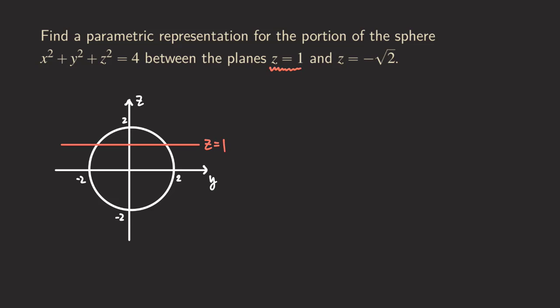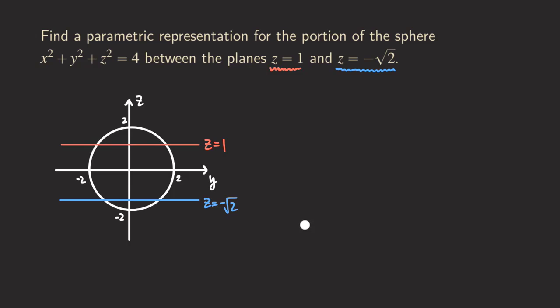The other plane is z equals negative square root of two. This one also looks like a horizontal line in the yz plane. The square root of two is about 1.4, so negative square root of two is about negative 1.4. So if we graph it, it will be probably here. So we have z equals negative square root of two.